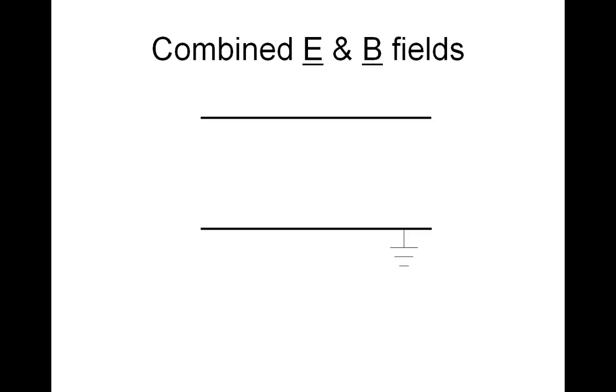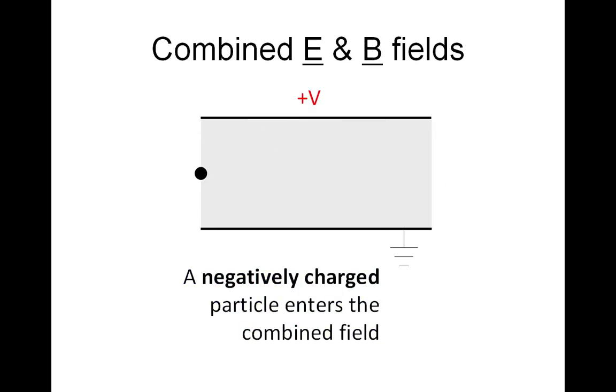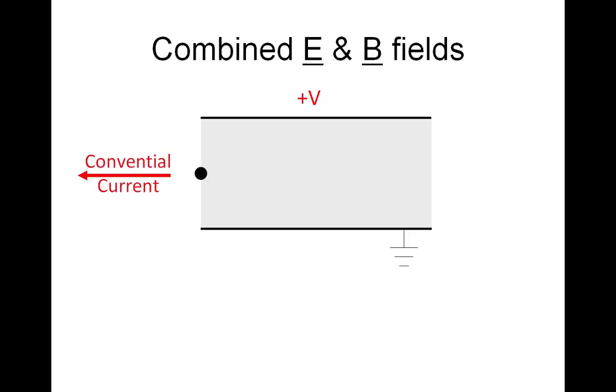Here's our electric field between two plates. It's downwards, and we have a magnetic field into the board. Here's our negatively charged particle entering the combined field. Because it's negative, conventional current is to the left, and using Fleming's left hand rule, that gives us the magnetic force downwards. The electric force, because it's a negatively charged particle, is upwards.